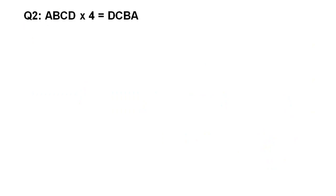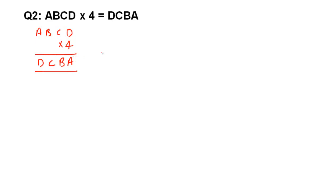Let us take the next question: ABCD multiplied by 4 is equal to DCBA. So the first thing we do is write it as ABCD multiplied by 4 giving DCBA. This is again a multiplication cryptomaths question. The first thing is to think of all possible values of A. A 4-digit number multiplied by 4 gives a 4-digit number, so A can only be 1 or 2.